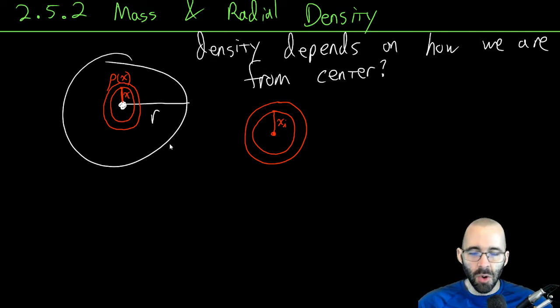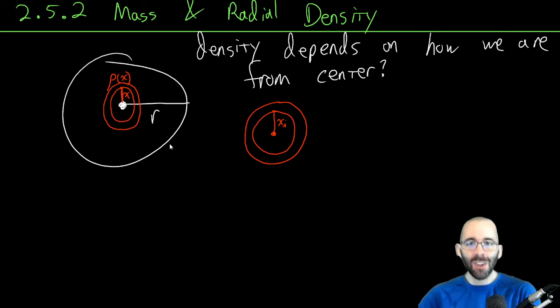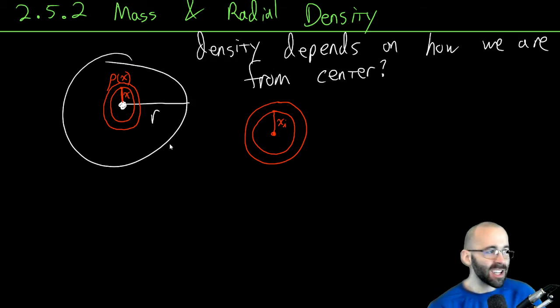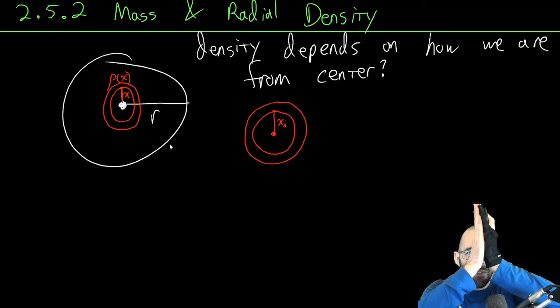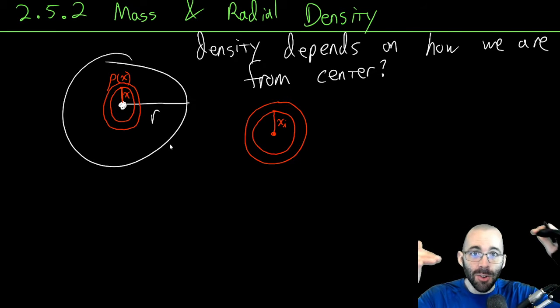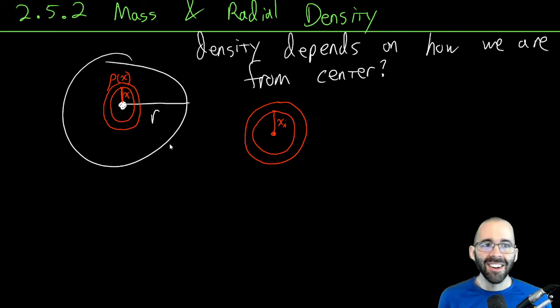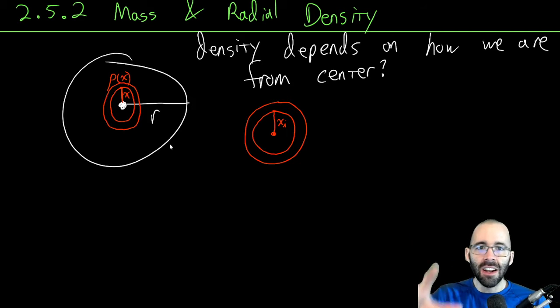If we add up all of those washers we'll get the total mass of the plate. That's calc two - just dividing things up into really tiny pieces and adding them all up. That's an integral, that's what integrals are.